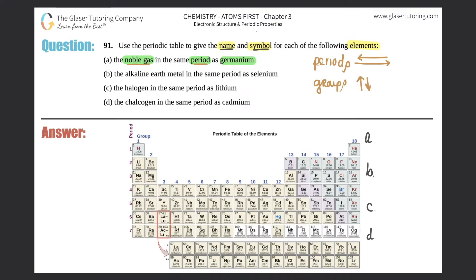So they want to know the noble gas in the same period as germanium. Well first off, where is germanium? Germanium, if you scan the periodic table, it's this element right here. It's Ge. So we're in the same period, so we have to basically be in period four. Any of the elements that are from here all the way to here.